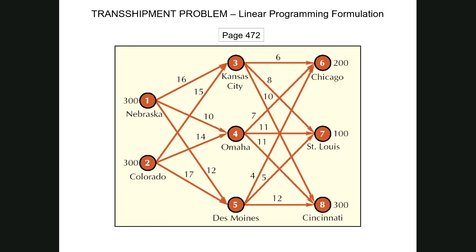Now, take a minute and determine how many decision variables we have in this problem. We have 15 decision variables — six associated with Nebraska and Colorado (three each), and then nine decision variables for Kansas City, Omaha, and Des Moines. So a total of 15 decision variables, each one represented by one of the lines in our network.